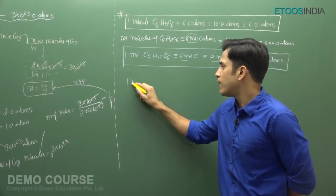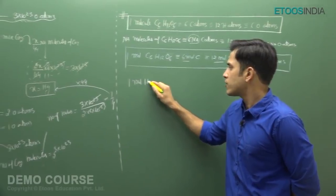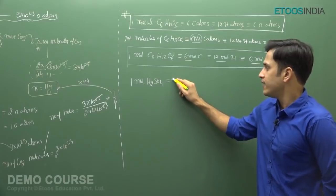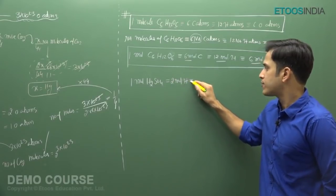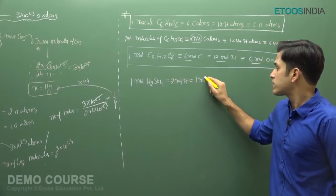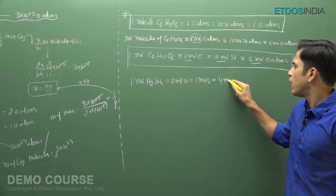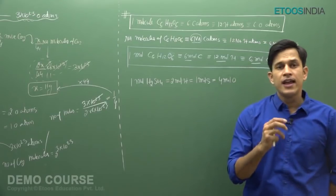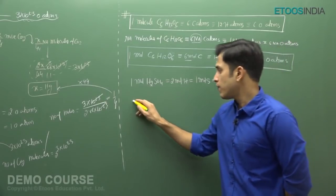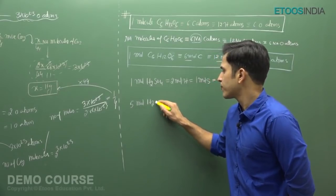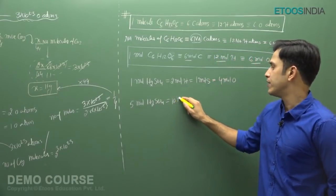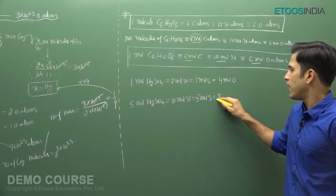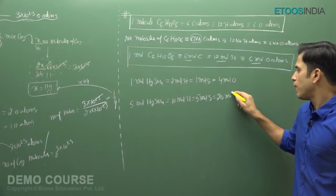For example, if you have 1 mole of H2SO4, then in 1 mole H2SO4 there will be 2 moles of hydrogen atoms, 1 mole of sulfur atoms, and 4 moles of oxygen atoms. If instead you have 5 moles of H2SO4, then you will have 10 moles of hydrogen atoms, 5 moles of sulfur atoms, and 20 moles of oxygen atoms.